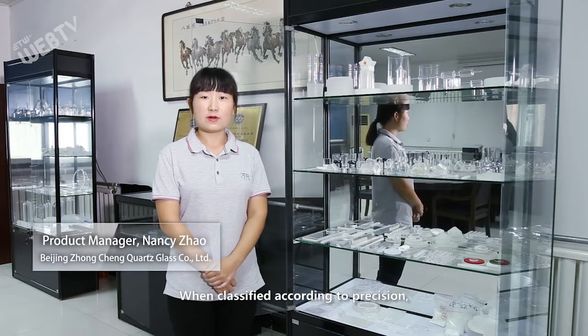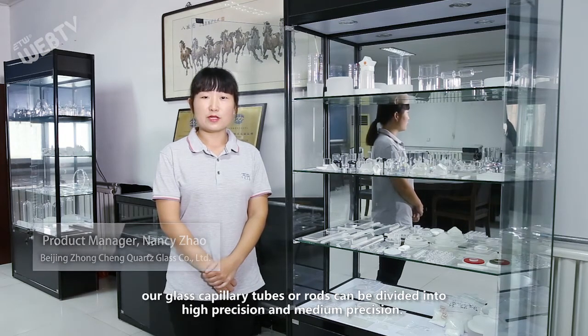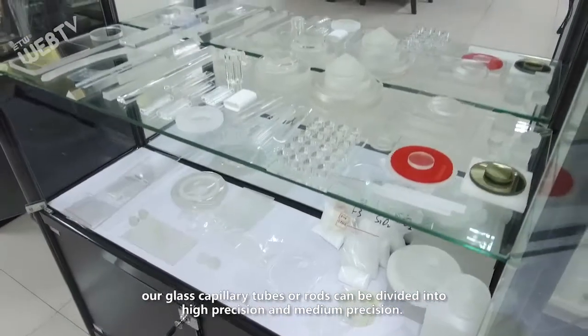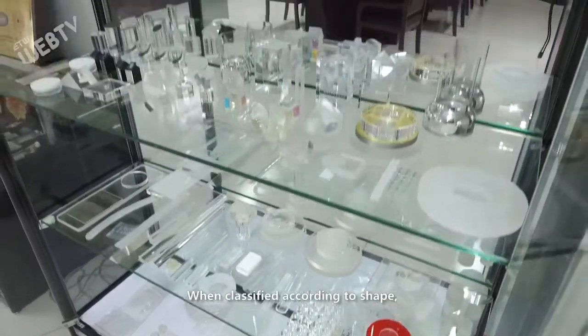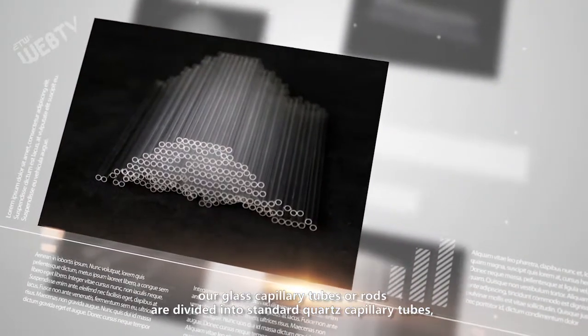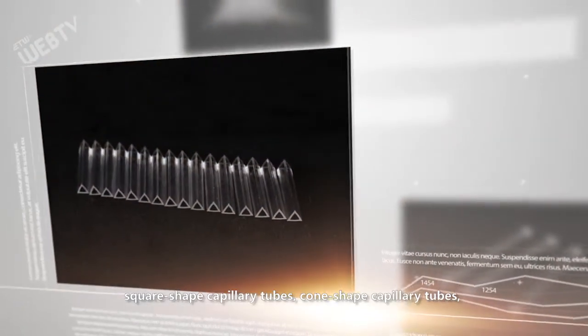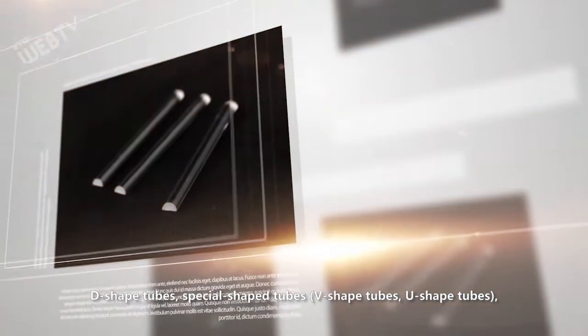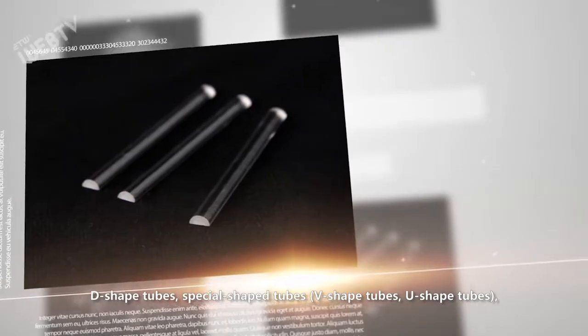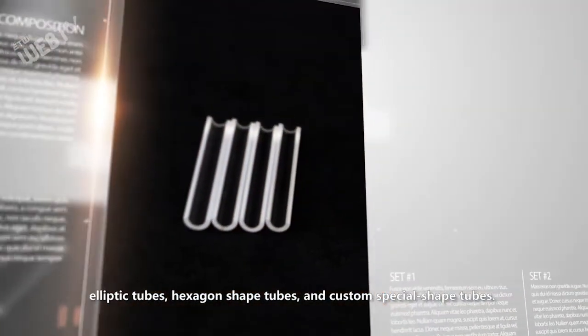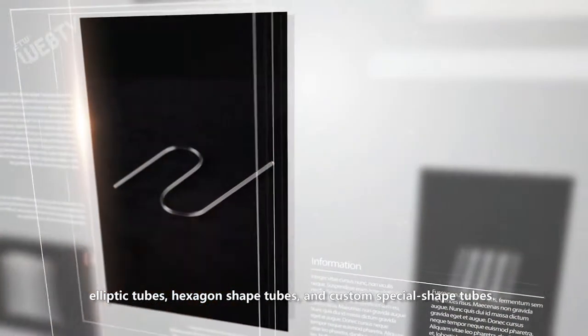When classified according to precision, our glass capillary tubes or rods can be divided into high precision and medium precision. When classified according to shape, our glass capillary tubes or rods are divided into standard quartz capillary tubes, square-shaped capillary tubes, cone-shaped capillary tubes, D-shaped tubes, special-shaped tubes, elliptical tubes, hexagon-shaped tubes, and custom special-shaped tubes.